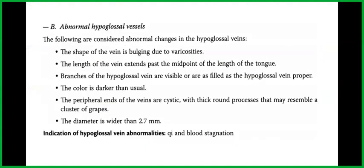The following are considered abnormal changes in the hypoglossal veins: the shape of the vein is bulging due to varicosities; the length of the vein extends past the midpoint of the length of the tongue; the branches of the hypoglossal vein are visible or as filled as the hypoglossal vein proper; the color is darker than usual, or the peripheral ends of the veins are cystic with thick round processes that may resemble a cluster of grapes; and the diameter is wider than 2.7 millimeters.